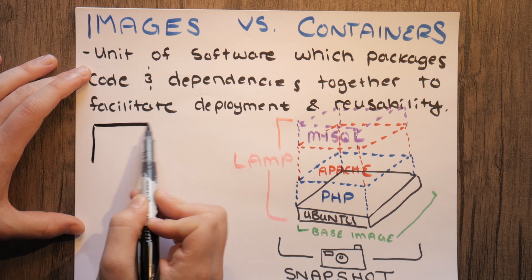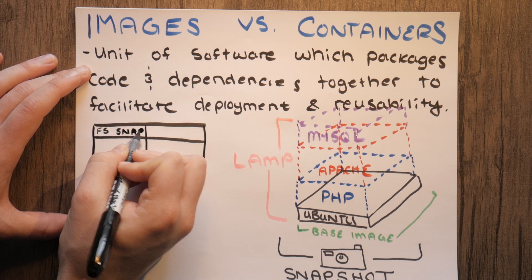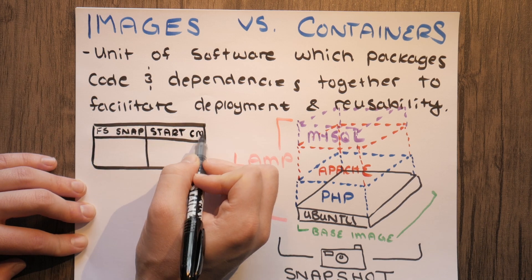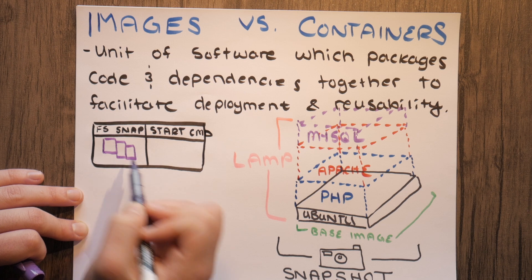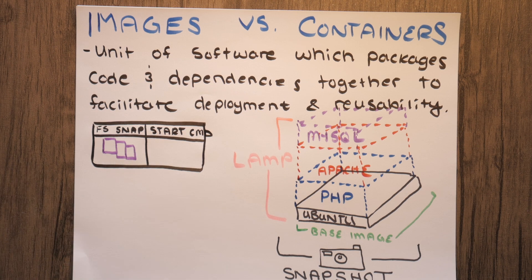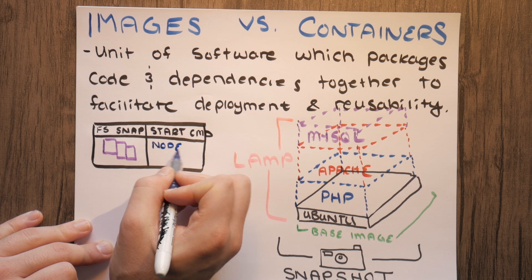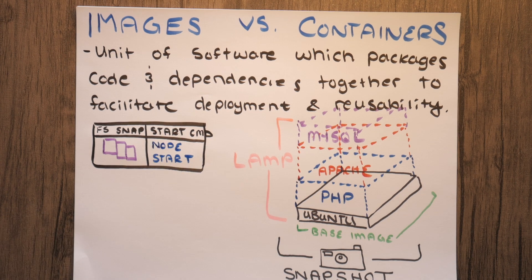This is possible due to the fact that we use the host operating system's kernel. We can split the composition of an image into two pieces. On the left hand side we have the file system snapshot, which is all of the dependencies and application code required to get our image running into a container. On the right hand side we have a start command, which is the default command that executes the initialization and startup of the process within the container.